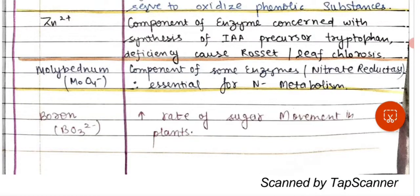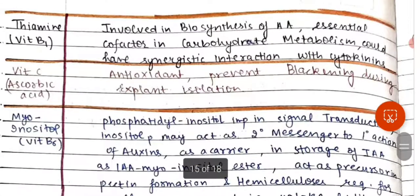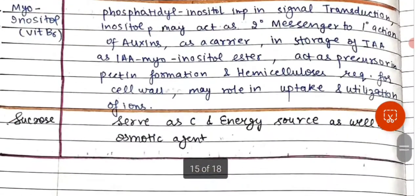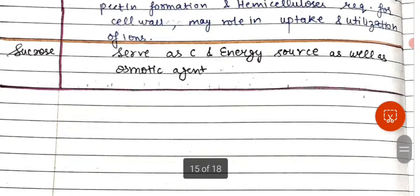Boron increases the rate of sugar movement in plants. Thiamine is involved in the biosynthesis of amino acids, is an essential cofactor in carbohydrate metabolism, and could have synergistic interaction with cytokinins. Vitamin B6 is also included. Sucrose serves as a carbon and energy source as well as an osmotic agent.